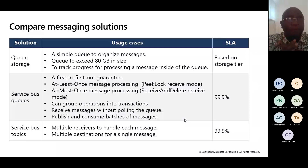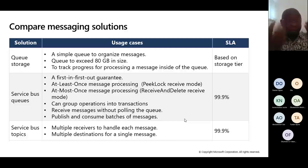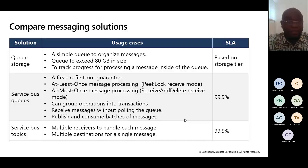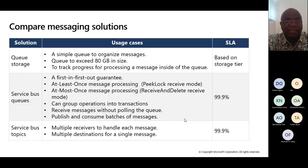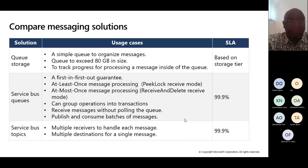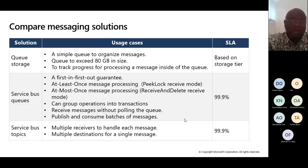For Queue Storage, it's used to organize messages and the SLA is based on the service tier. You can queue up to 80 GB and track progress for processing a message inside the queue. For Service Bus, we have a first-in, first-out guarantee — at least once and at most once message processing. The SLA is 99.9%, which is actually quite strong.